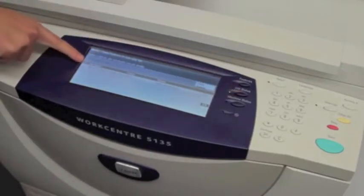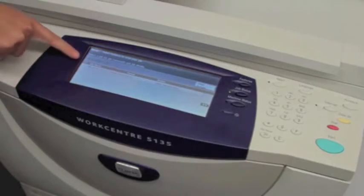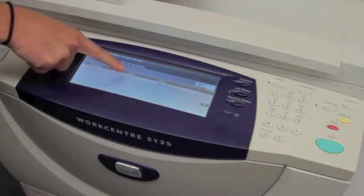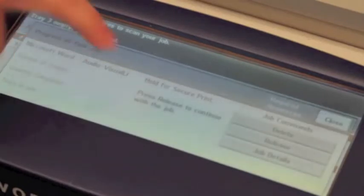In this section, you'll see a list of print jobs. The one at the top tells you the job name, Microsoft Word, the owner, what computer it came from, and the status, held Secure Print. To release your job, simply select it,